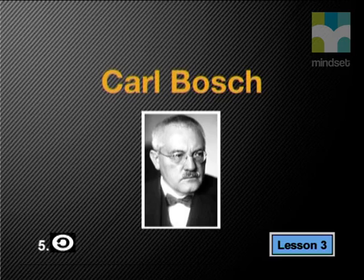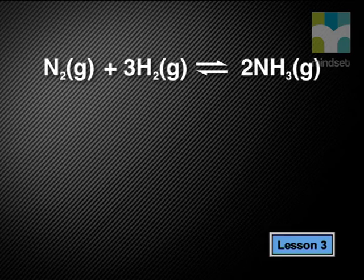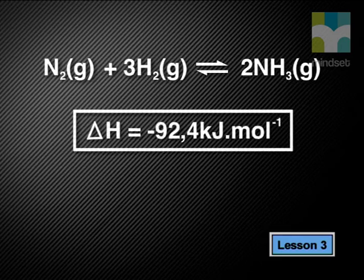Another German chemist, Karl Bosch, contributed to Haber's work. He worked out the best conditions required for making ammonia. The reaction of nitrogen and hydrogen to form ammonia is exothermic. The enthalpy delta H is equal to negative 92.4 kilojoules per mole. Can you predict by applying Le Chatelier's principle what conditions of pressure and temperature will favor the increased production of ammonia?